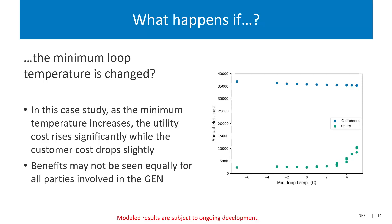We build out all this modeling to answer interesting questions. The first example: what if you changed the minimum loop temperature? The way our control system is set up, you decide when pumps ramp up, when the borehole gets used, and when auxiliary heat turns on to maintain a minimum temperature. We found that as you increase that minimum loop temperature, the cost to the utility goes up greatly — they're working hard to maintain higher temperature — but the cost to the consumer goes down slightly because their heat pump is working more efficiently. You see this trade-off in annual electricity costs, highlighting how benefits must be shared among all parties.